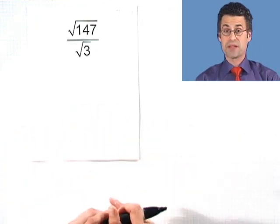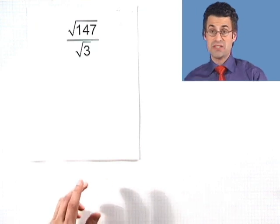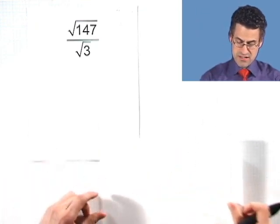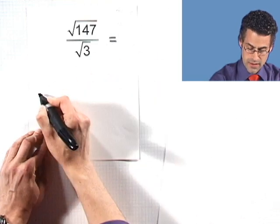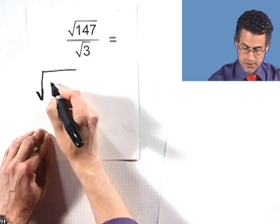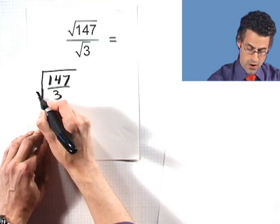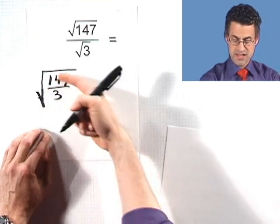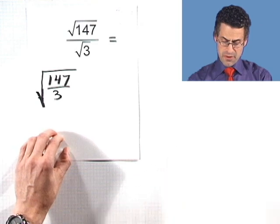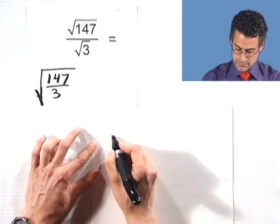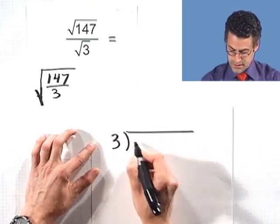Again, this looks really complicated. I want us to look at this now in two different ways. The first way is to just rewrite this as square root of 147 all divided by 3, one huge square root that covers the entire fraction. Then we could actually divide out and see what we get.